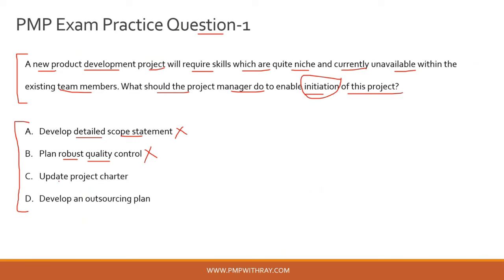Option C: update the project charter. This is probably the right answer because updating or creating the project charter and reviewing it with your sponsor happens in the initiation stage of the project. Option D: develop an outsourcing plan — essentially a procurement plan — which is developed in the planning stage, not in initiation. So option D is also incorrect. The correct answer to this question is option C.